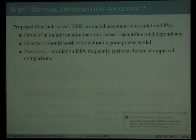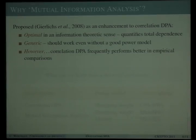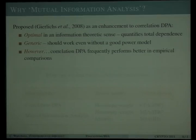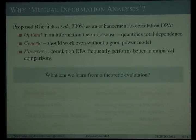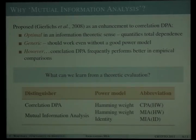Mutual information is a measure of the total dependency between two random variables and can be seen as optimal in some sense. It has also been promoted as a generic approach that should remain effective even without a good power model. However, empirical investigations have found that correlation DPA consistently outperforms MIA despite only being able to exploit linear dependencies. Many studies have focused on finding improved estimators for MIA. Our evaluation framework allows us to ask whether and when MIA superiority is even theoretically possible — a question somewhat overlooked in the literature. We compare three attack strategies: MIA, correlation DPA with a Hamming weight power model, and MIA with an identity power model, often thought of as generic MIA.